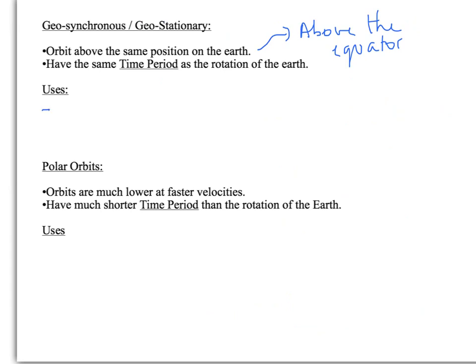So it has a lot of very useful properties. It's used mostly in communication. Because if something is in the same position in the sky, you can point your aerials and satellite dishes at the same point in the sky and you'll get a reception every time. So it's used in things like TV and mobile. That's a geosynchronous or geostationary satellite.